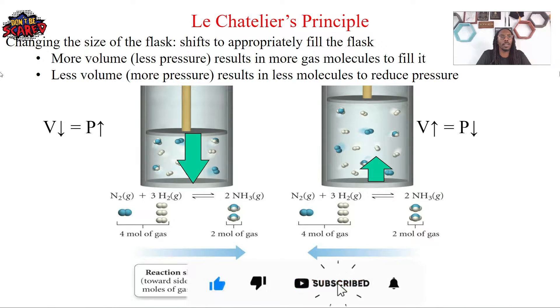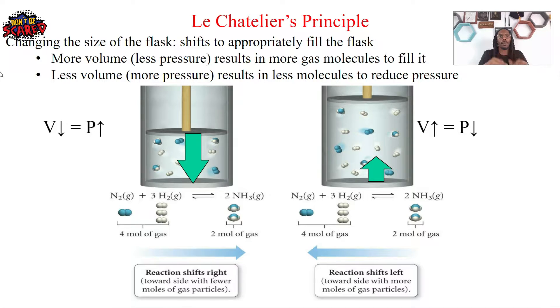Let's look at an example. Let's say we have N₂ and H₂ giving us NH₃.